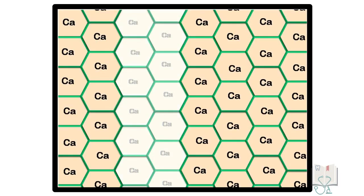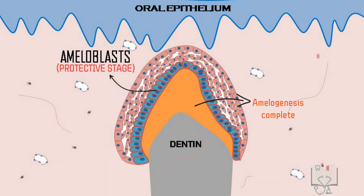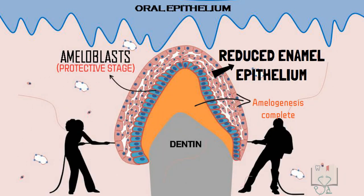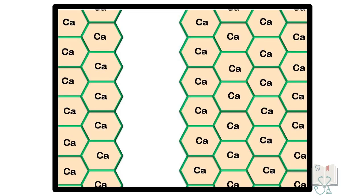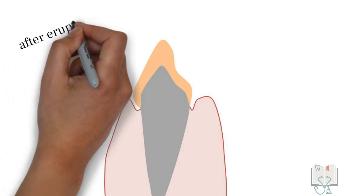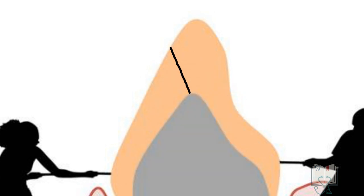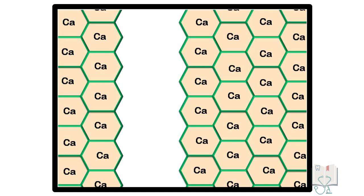Type A lamellae are composed of poorly calcified enamel rods. Type B lamellae are formed after enamel formation is complete but before eruption of the tooth into the oral cavity. These may extend up to the dentino-enamel junction or may cross it to reach dentine. Type B lamellae consist of degenerated cells of the enamel organ or cells of the dental sac. Type C lamellae are formed after the eruption of the tooth into the oral cavity. These may also extend up to the dentino-enamel junction or may cross it to reach dentine. Type C lamellae consist of organic matter originating from saliva.